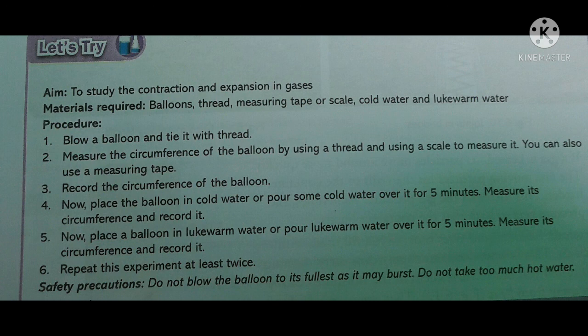Procedure: First, blow up a balloon and tie it with thread. Measure the circumference of the inflated balloon using a thread and scale, or a measuring tape, and record it. Now place the balloon in cold water or pour cold water over it for 5 minutes. Measure its circumference again and record it. When the balloon is placed in cold water, its circumference decreases.